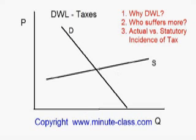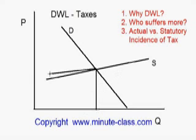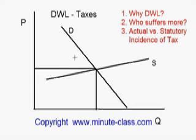From this graph we will see that at the market equilibrium, this is the amount the society is going to produce and this is the level the good is going to be priced. We know that this area is the producer surplus and this area is the consumer surplus.